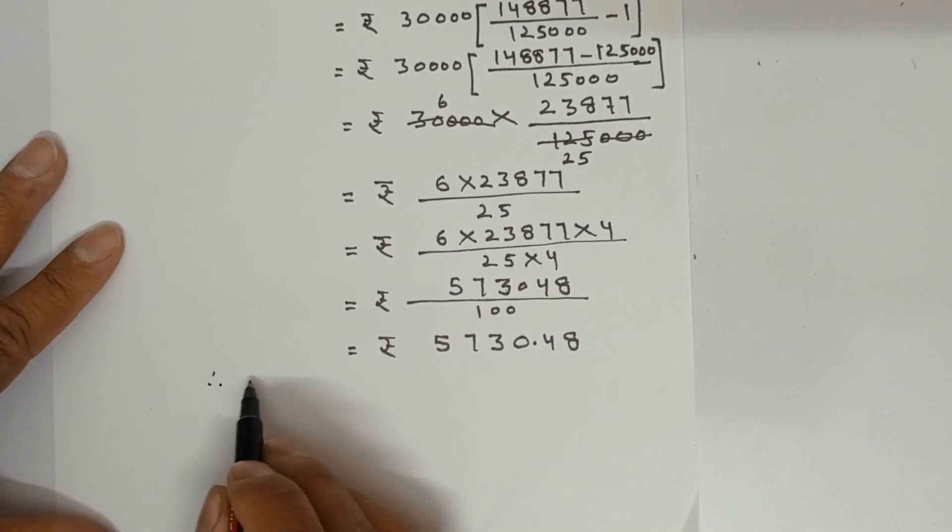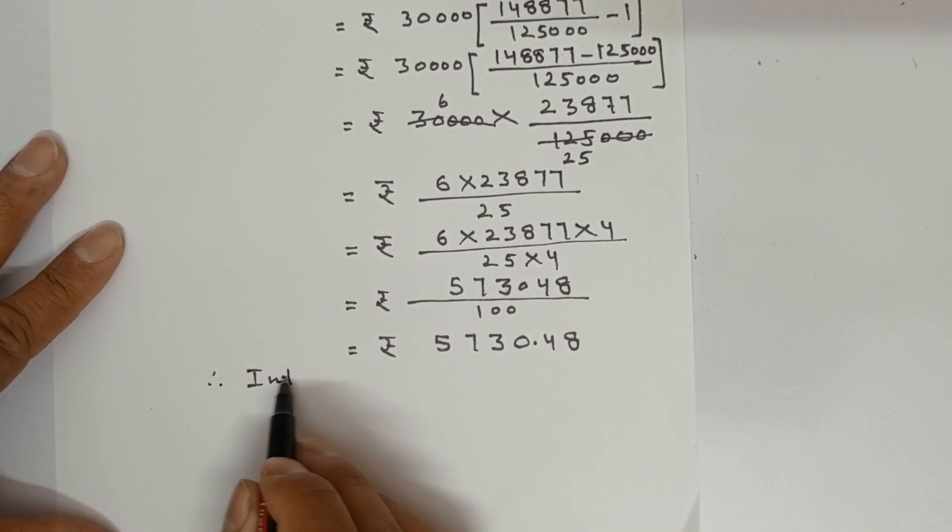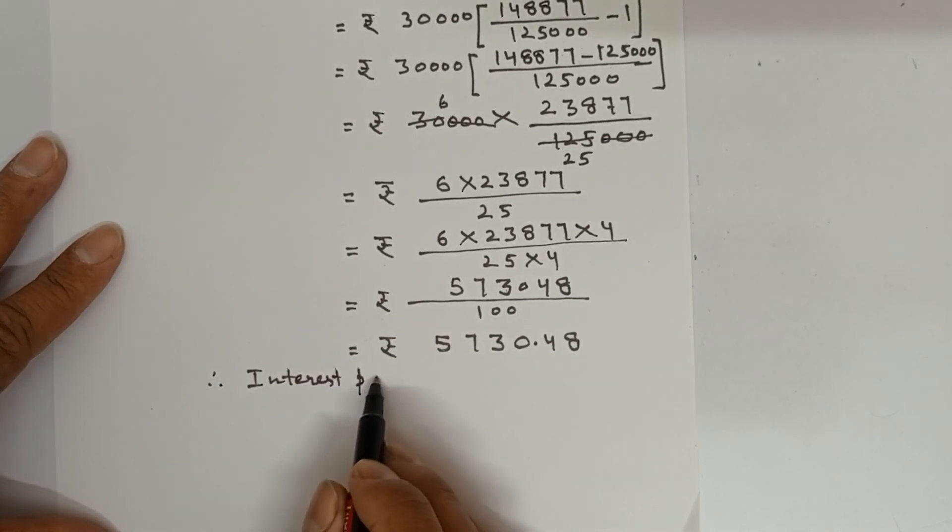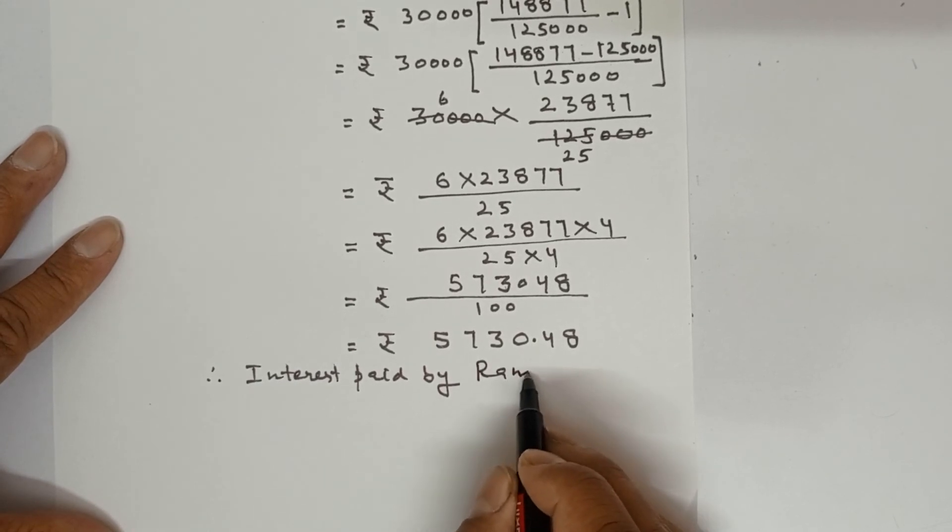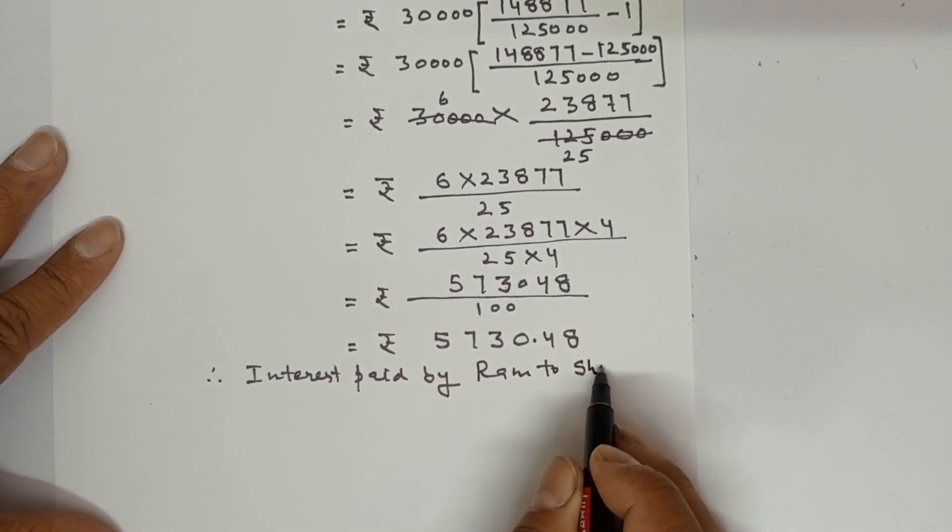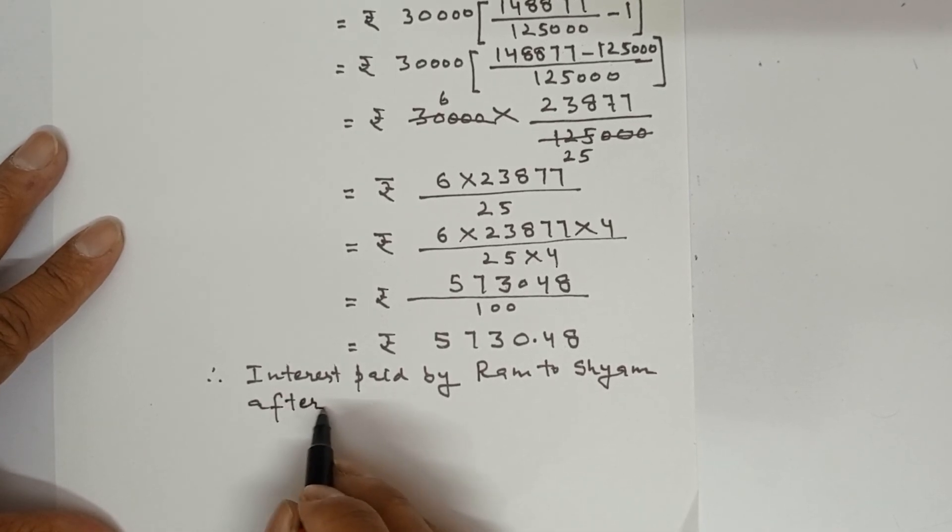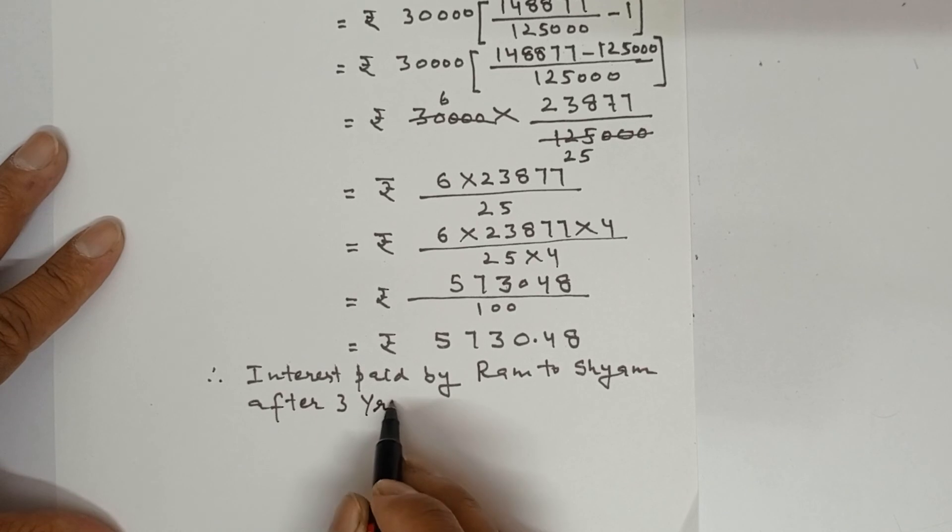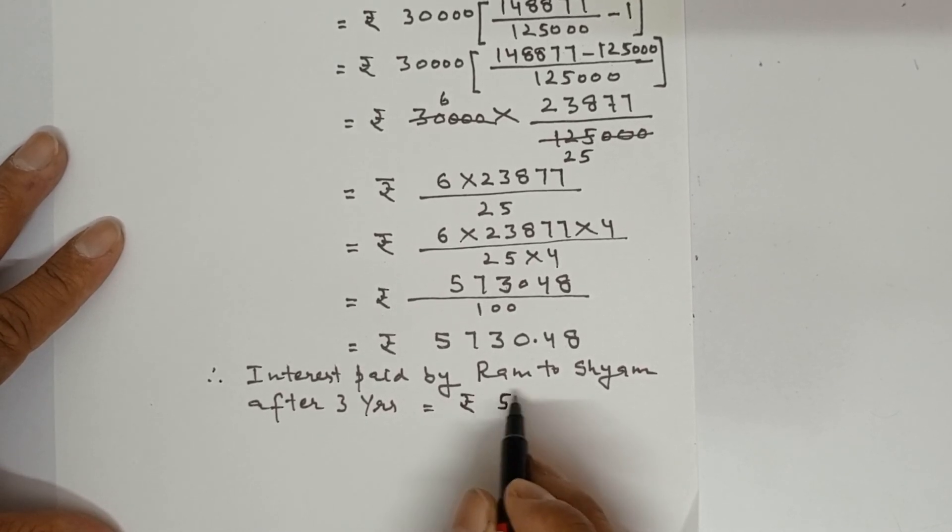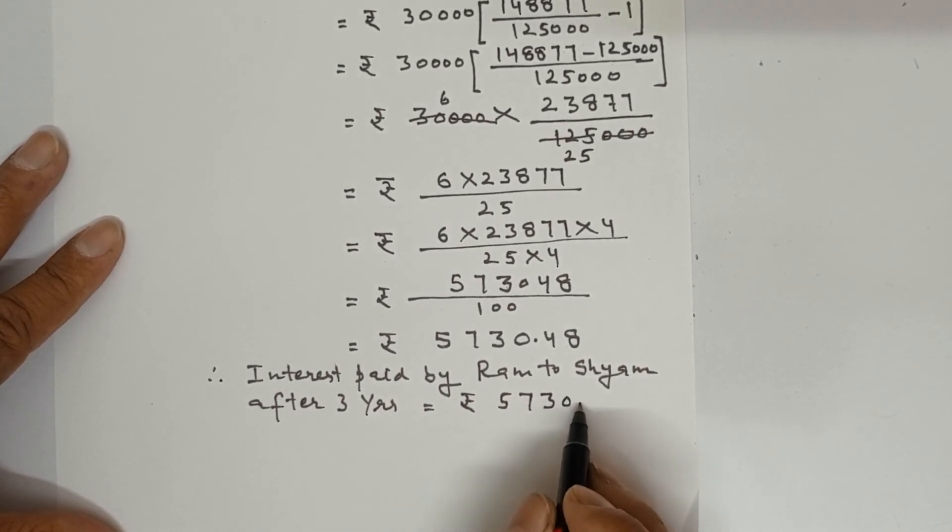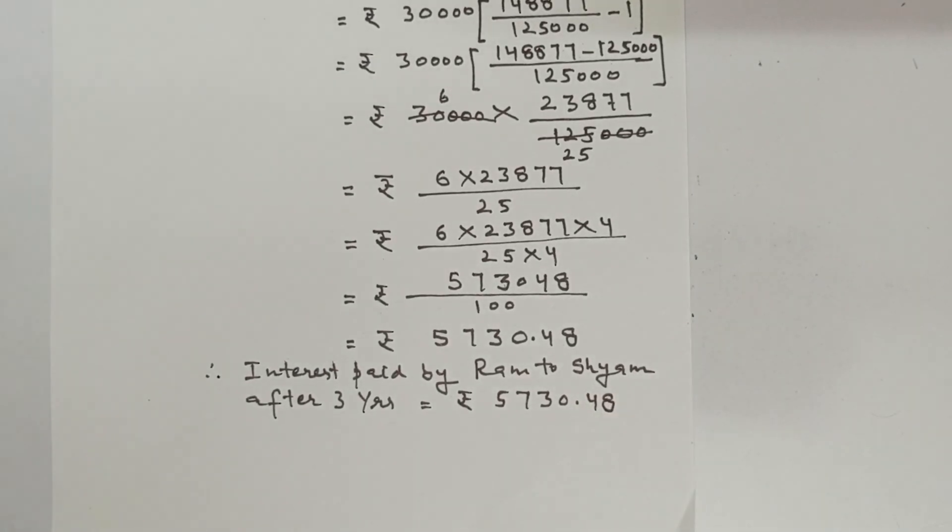So therefore interest paid by Ram to Shyam after 3 years. It will be Rs. 5,730.48. So this is the solution of question number 3 of worksheet number 3, compound interest. Hope you have understood it. Thank you.